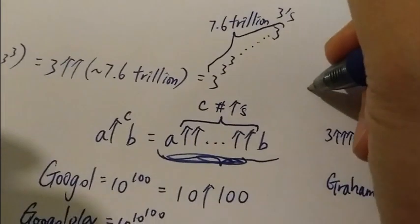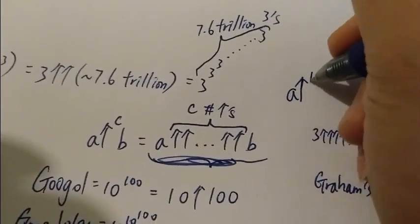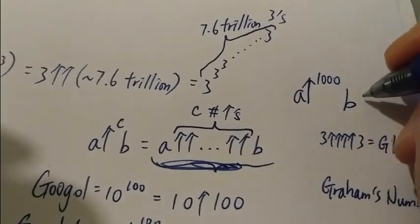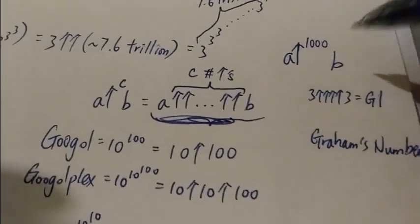For example, if you let's say A up arrow a thousand B, it just means A with a thousand arrows B. So this is a very, very big number.